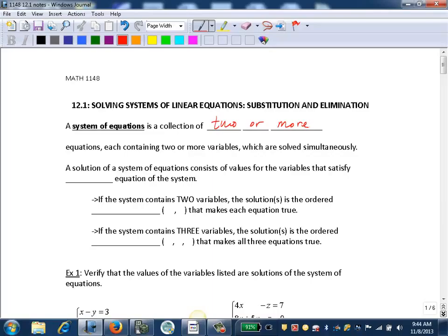A solution of a system of equations consists of values for the variables that satisfy each equation of the system. If the system contains two variables, like we're familiar with already, the solution is the ordered pair that makes each equation true. So it's typically an x-y pair, a set of two variables like x and y, a and b, etc.